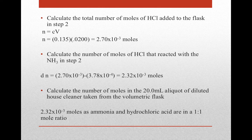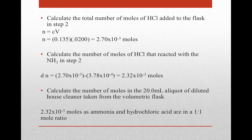To find the moles of HCl that reacted with NH3 in step 2, we consider the difference: ΔN. We take the total amount from step 2 — 2.70 × 10⁻³ moles — and subtract the amount that reacted in step 3 — 3.78 × 10⁻⁴ moles. The result is 2.32 × 10⁻³ moles of HCl that reacted with ammonia.